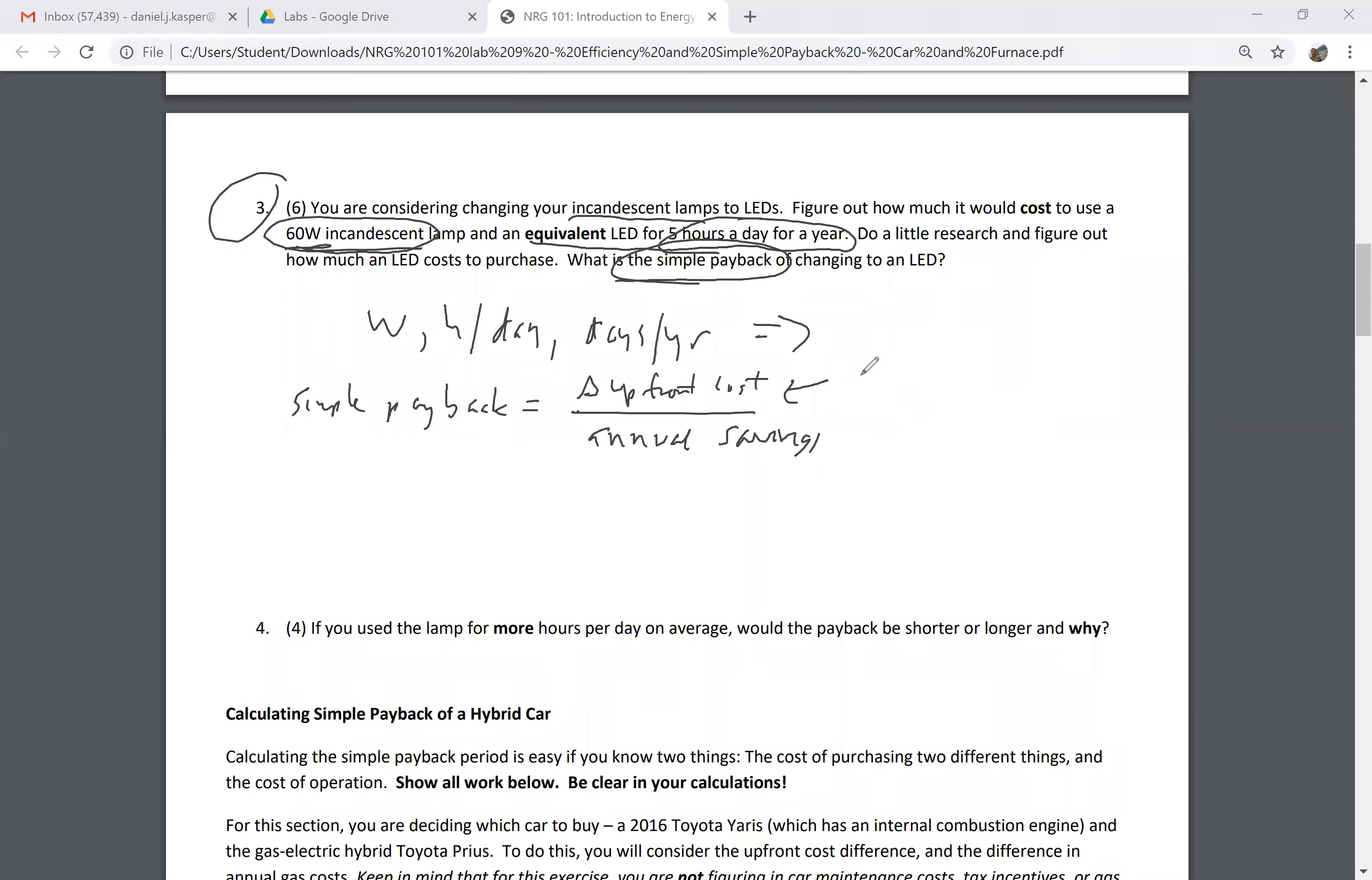As I explained in the lecture, simple payback always involves a choice between two things, never more than two, never less than two. It has to be two things. In this case, my choice is I already have my 60 watt.